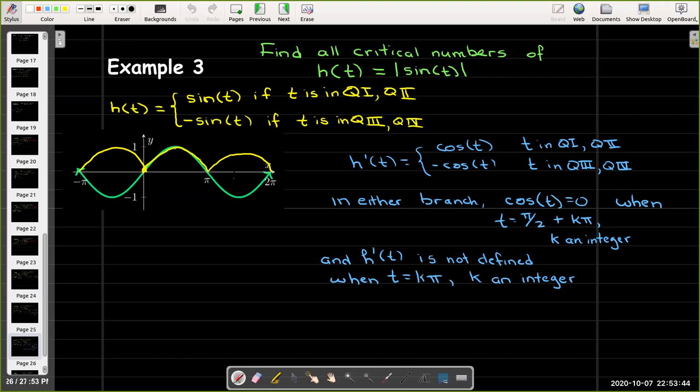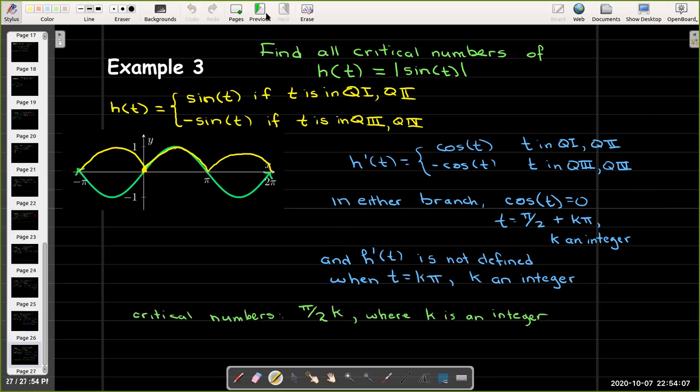And we have these cusps at all the integer multiples of pi. So if I put those together, so I've got critical numbers here at the integer multiples of pi, but I also have the critical numbers at pi over two plus an integer multiple of pi. So I can summarize that as being just pi over two times k, where k is an integer, any integer multiple of pi over two.